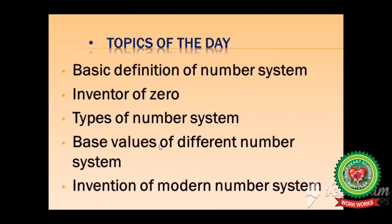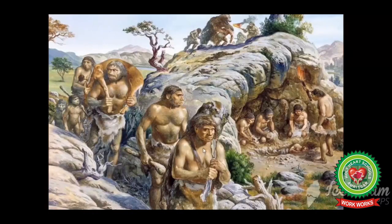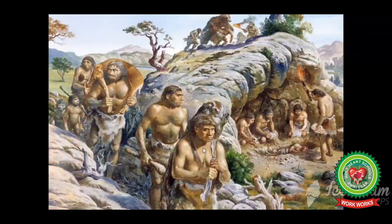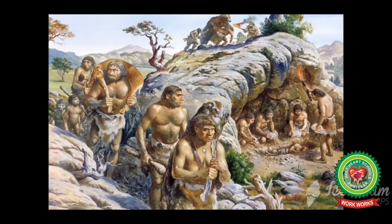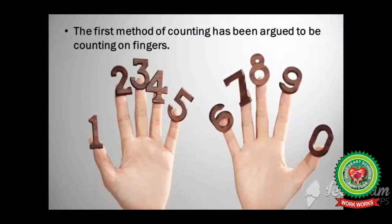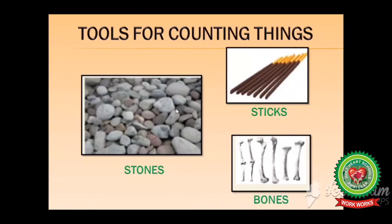Students, in earlier times when there was no means of counting, people used to count with fingers. The first method of counting has been argued to be counting on fingers, but they could not count beyond ten numbers. For larger numbers they started counting with stones, sticks, and bones, but these methods were not adequate and had many limitations.